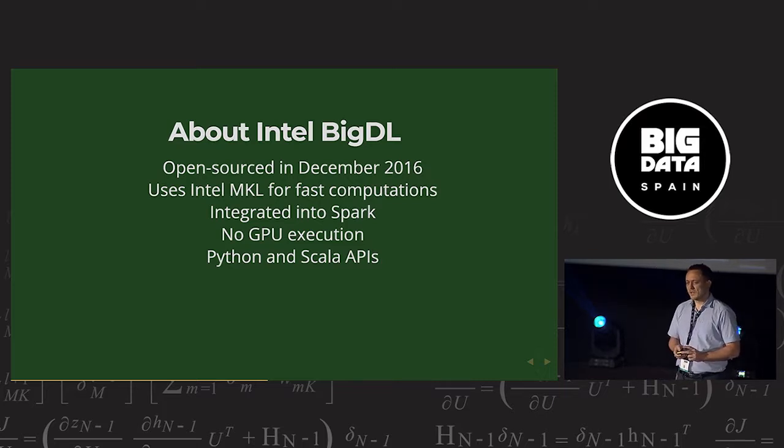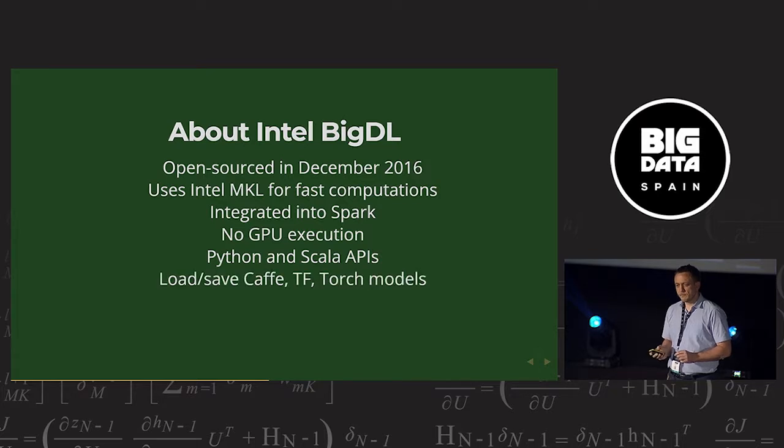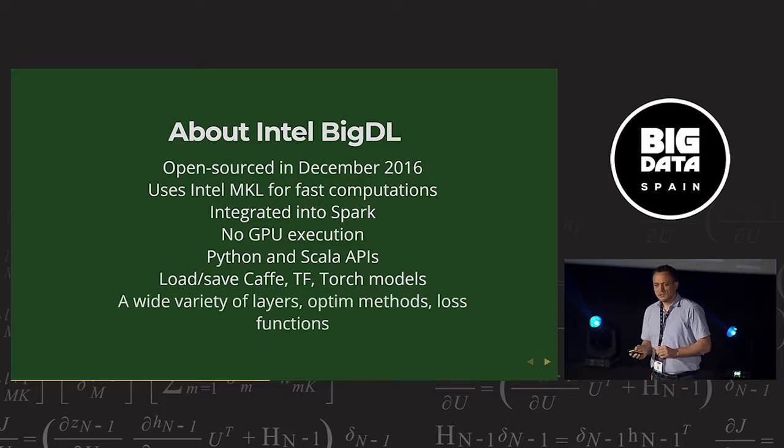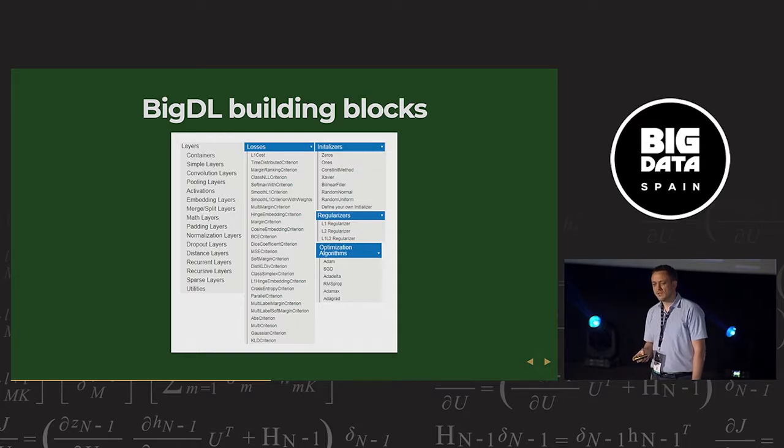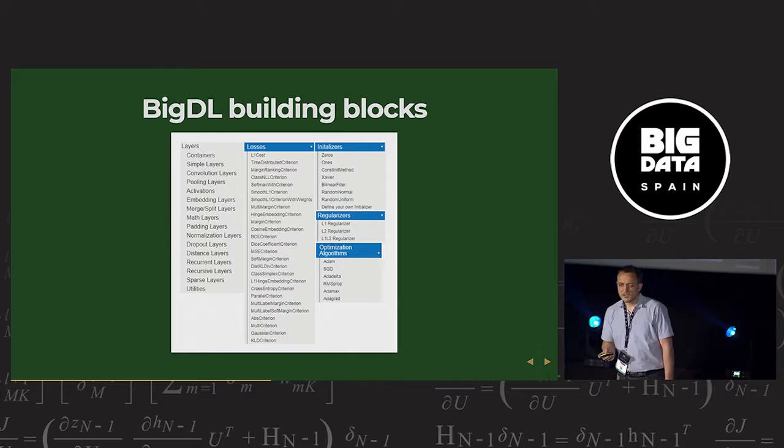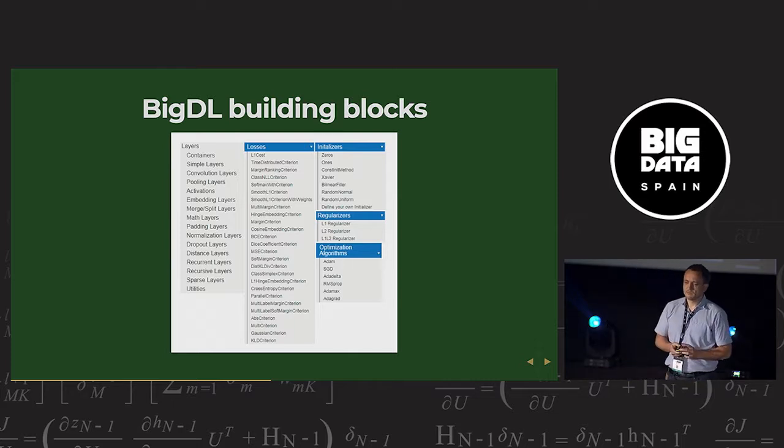You have Python and Scala APIs. And you can load and save Caffe, TensorFlow, and Torch models. And there's really a wide variety of layers, optimization methods, loss functions, and so on. This is just from their website, what they provide. There's no time to go through all of these. I guess all the components that you might need are there.